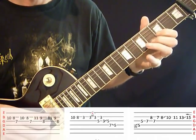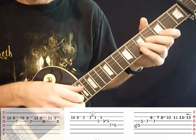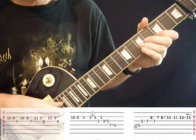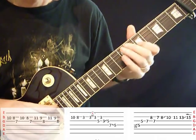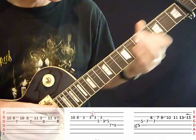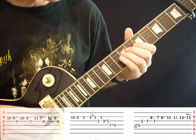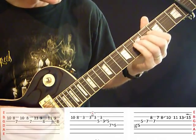Slowly. For the hammer on, pull off. Slide that 1st finger from 3rd to 5th, and then 3rd finger from 7th to 5th slides down.